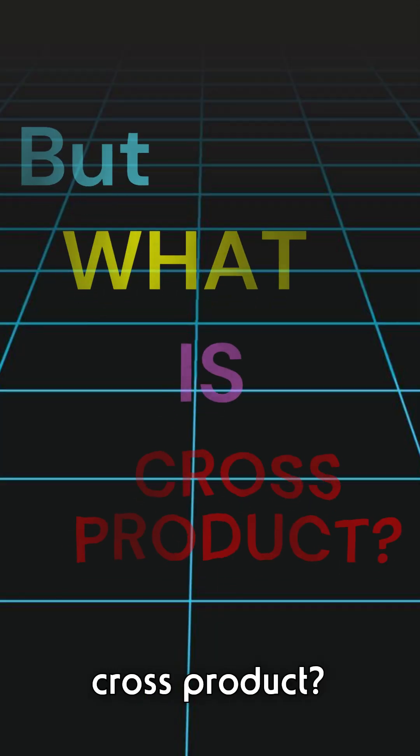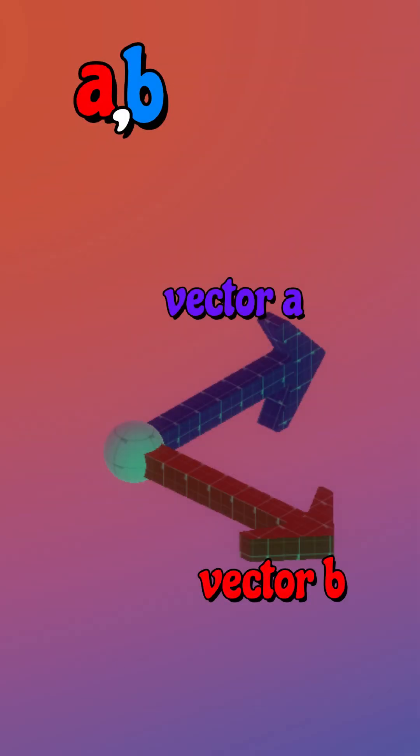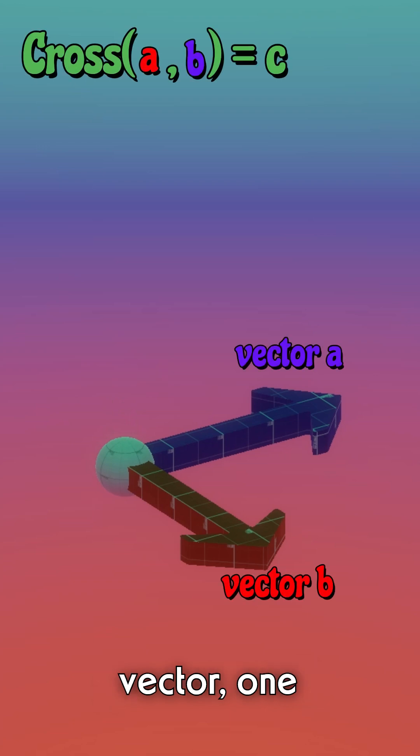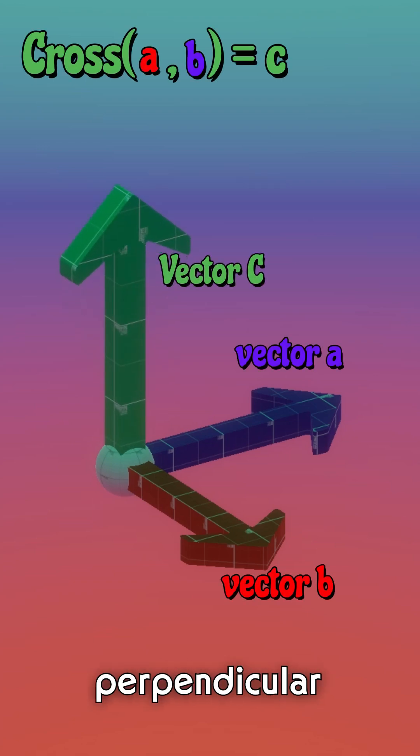But what is the cross product? Let's say we have two vectors, one red, one blue. Their cross product is a third vector, one that's perfectly perpendicular to both.